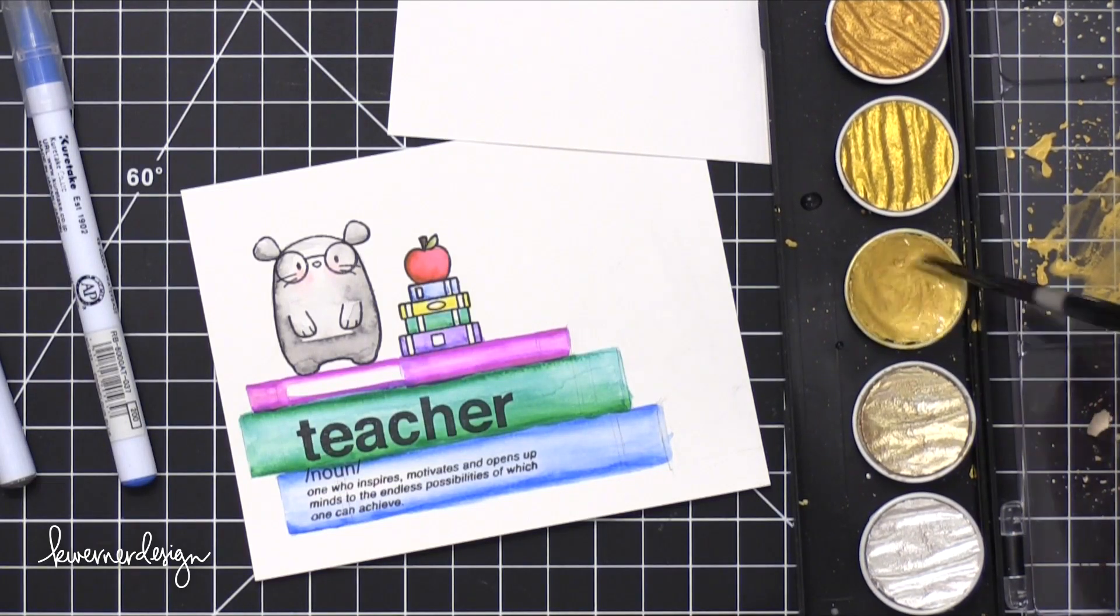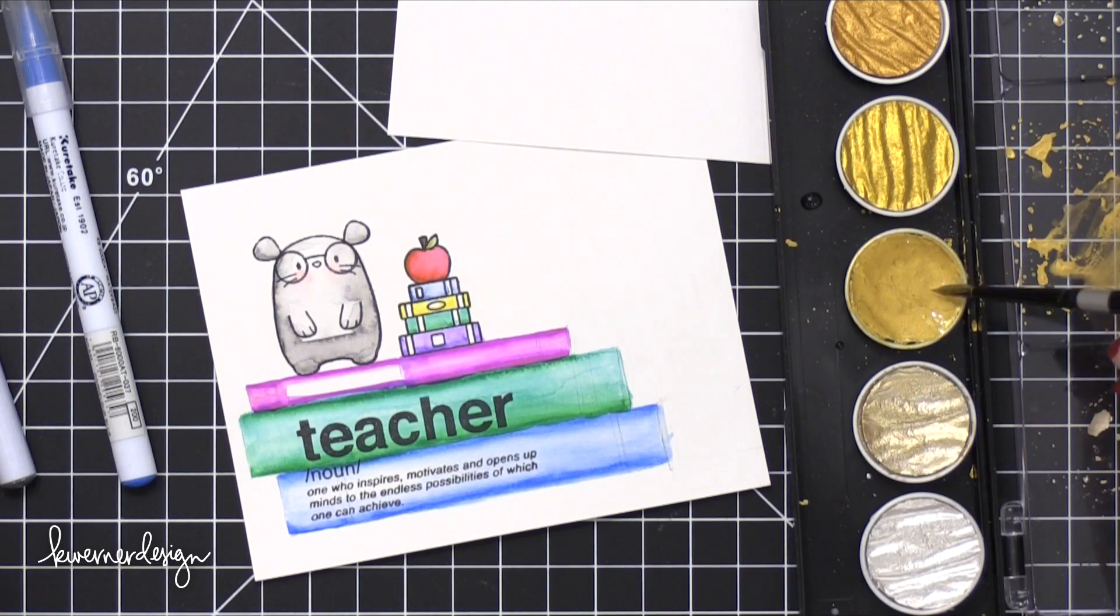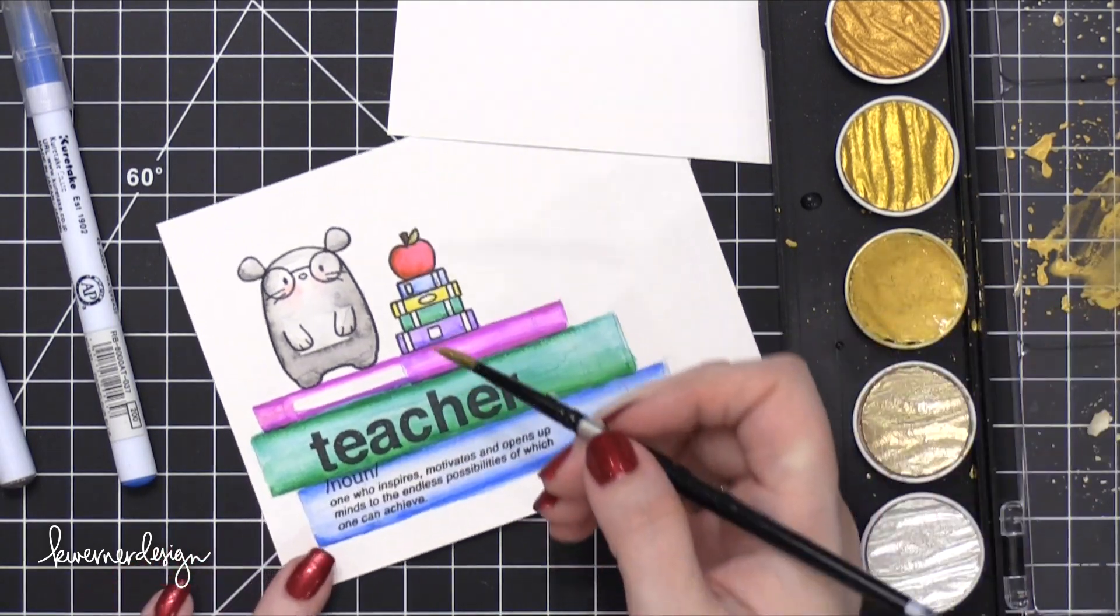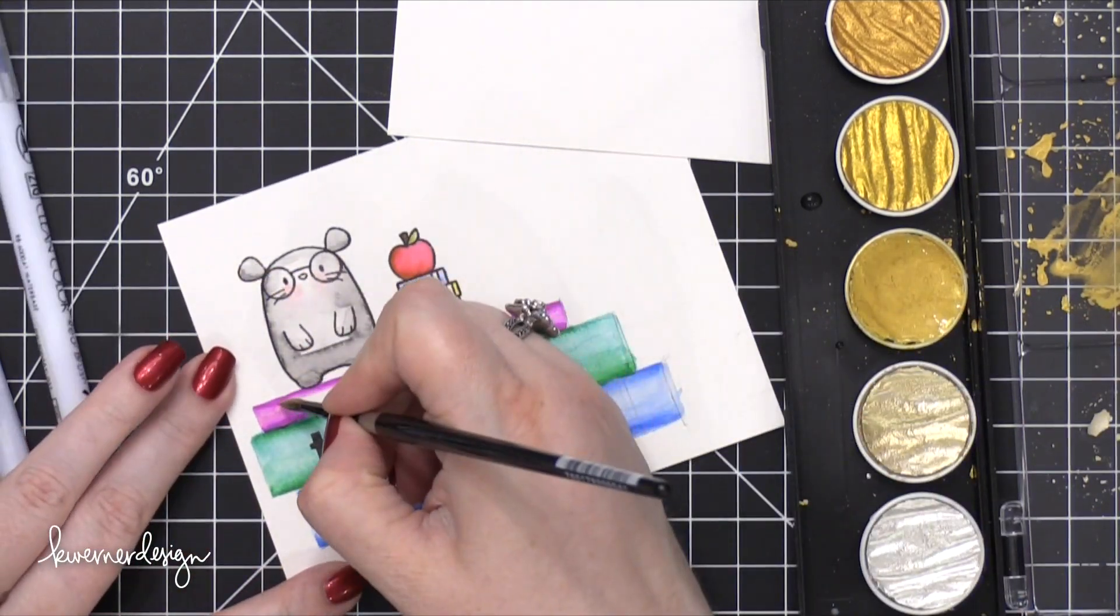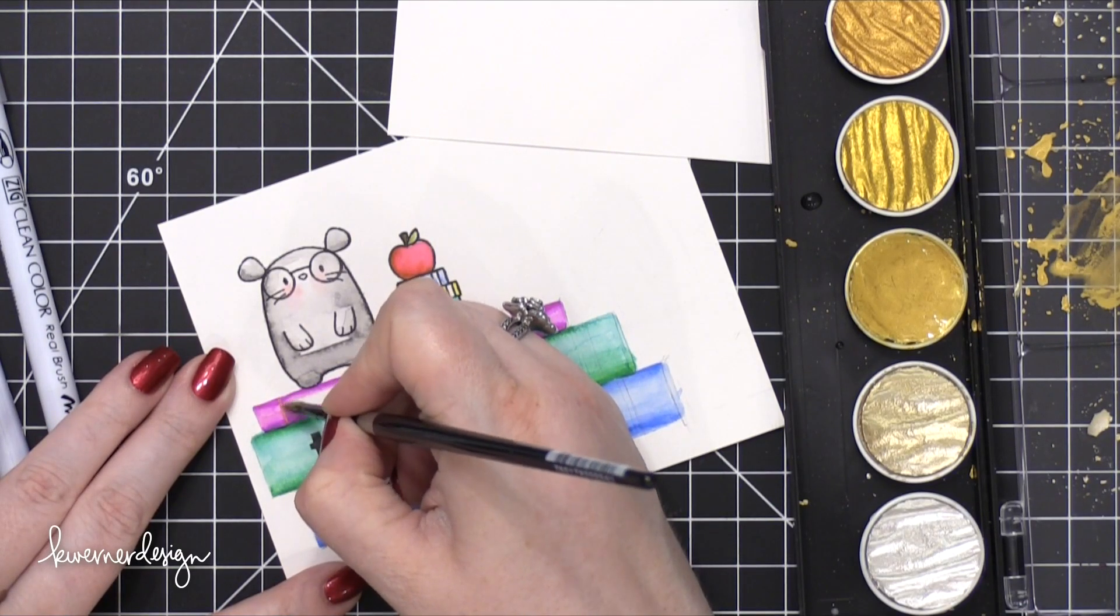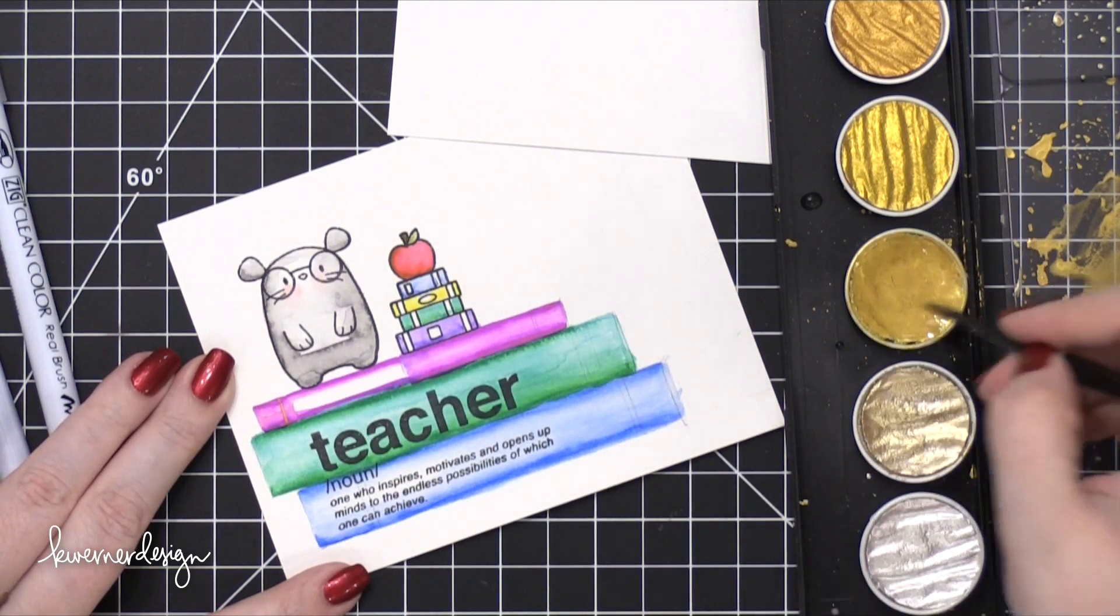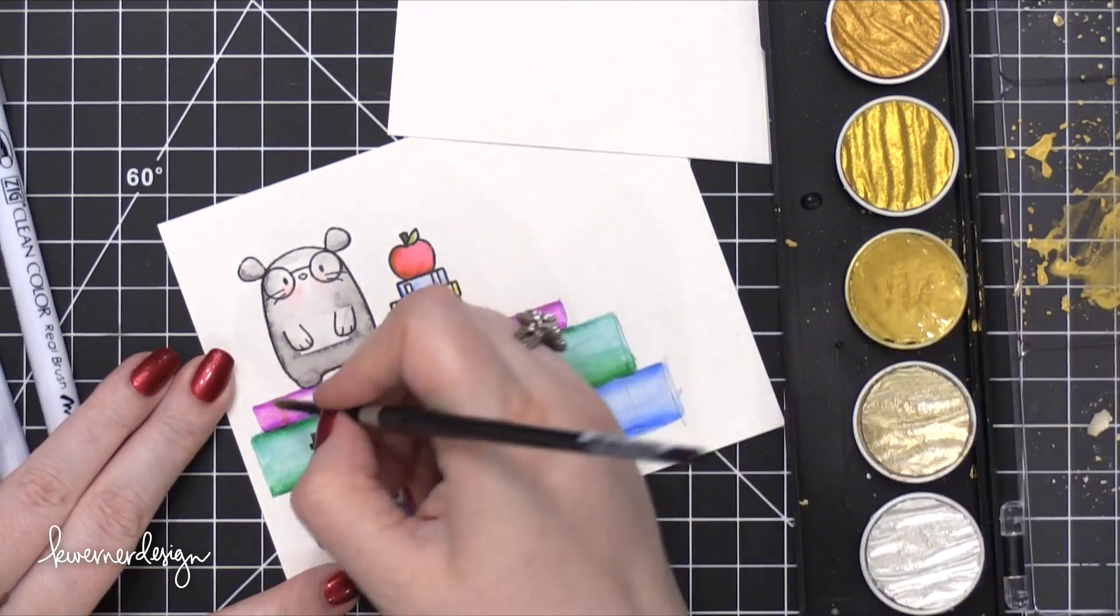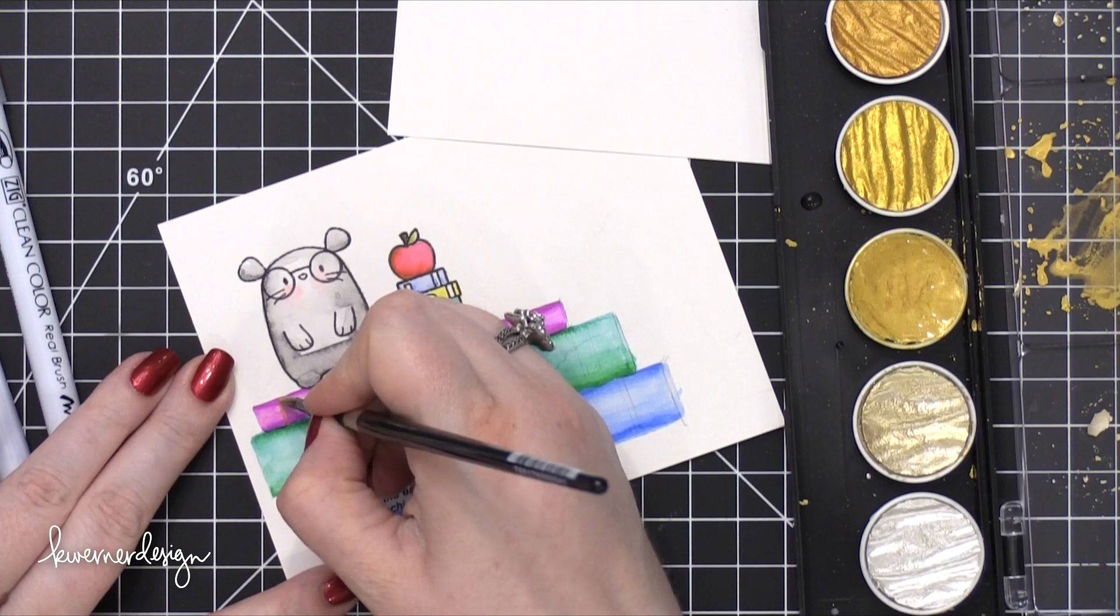I'm not using my water brush because I wanted this paint to remain very thick so that it would cover the color underneath. I want it to be quite opaque. And if I used a water brush, I was afraid that too much water would continue to come out of the brush and really water down that gold paint.